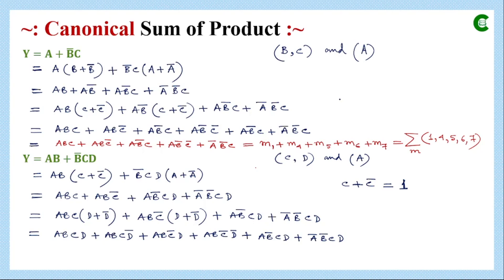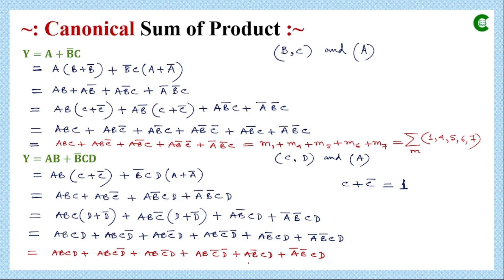In the last step we check for redundancy — all six minterms are different from each other, so there is no redundancy and we keep all of them. This is one format; you can also represent by the second and third format as done in the first example. This function has four variables, so total combinations will be 16, numbered 0 to 15.